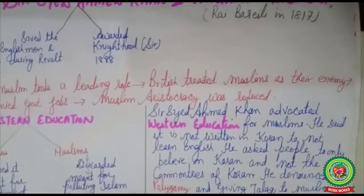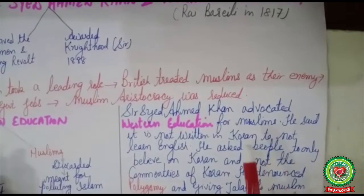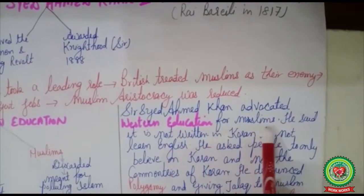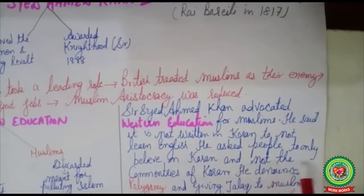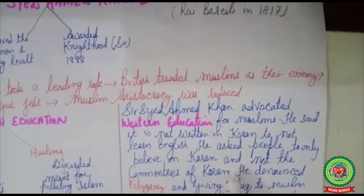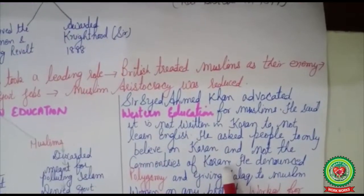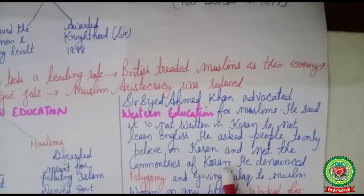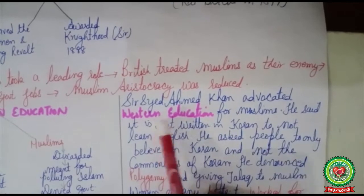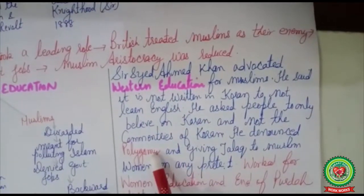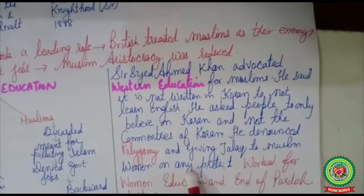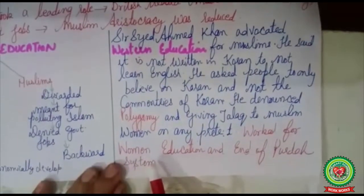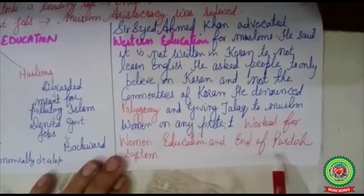Seeing the miserable position of Muslims in society, Sir Syed Ahmed Khan advocated Western education for Muslims. He said it is not written in the Quran to not learn English. He asked people to believe only in the Quran and not other commentaries, arguing that the Quran is not against learning Western education and that Muslims should equip themselves with it. He also denounced polygamy, opposed divorce on trivial pretexts, and worked for women's education and the end of purdah in Muslim society.